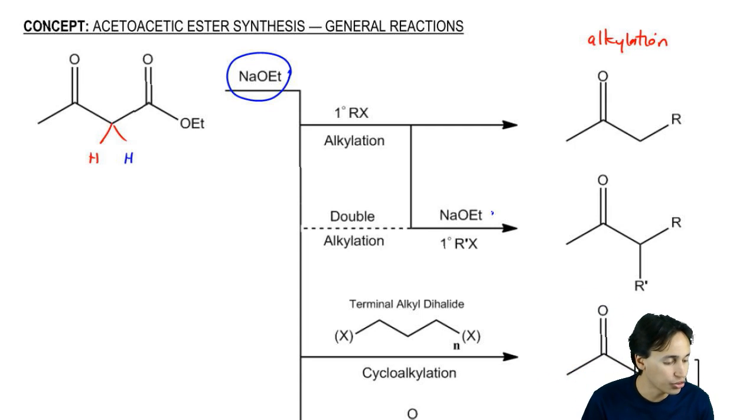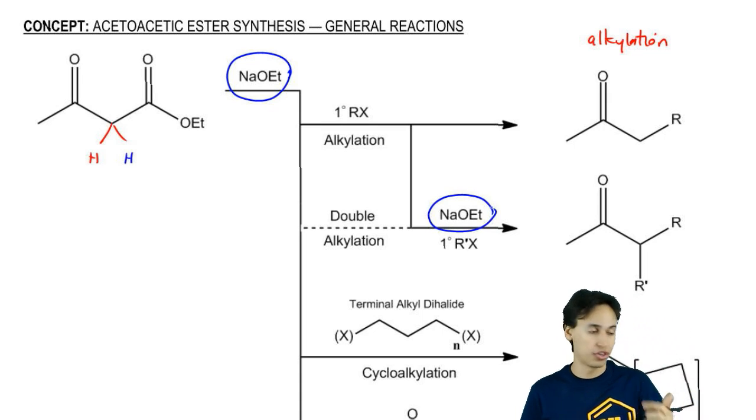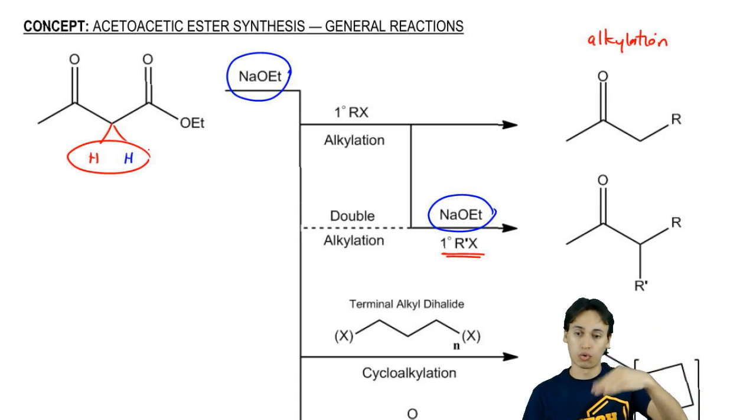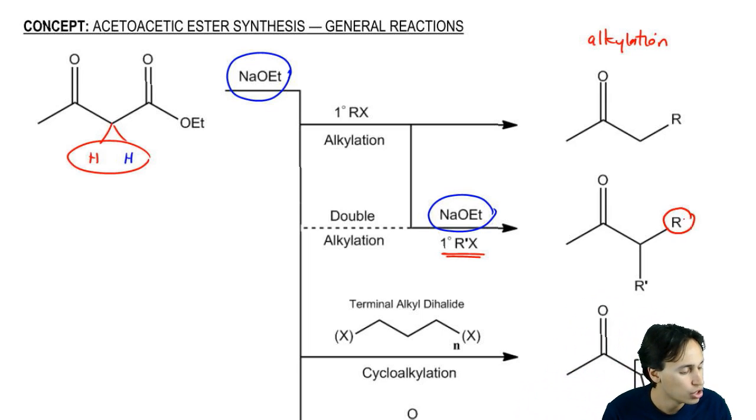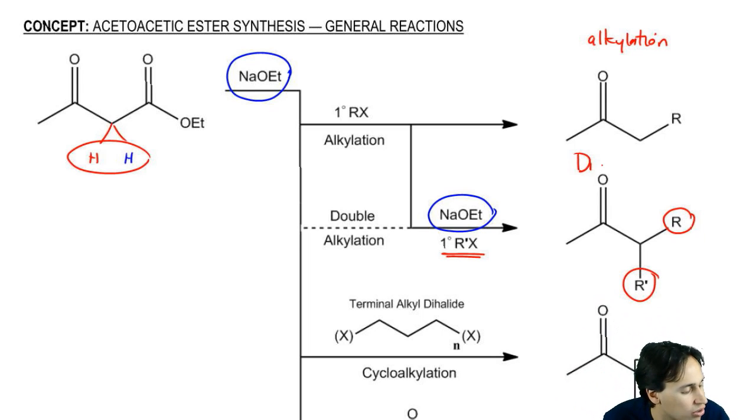you could deprotonate the other one with another equivalent of base and then react with another alkyl halide. That way, by reacting twice, you would remove both of these hydrogens one after the other and you would actually get now two R groups attached to the alpha carbon. This would be dialkylation.